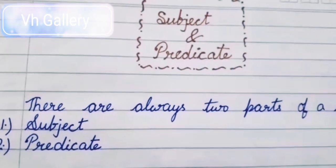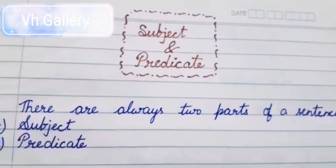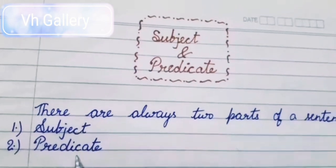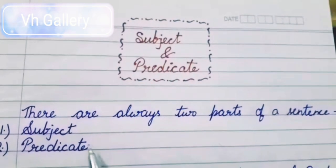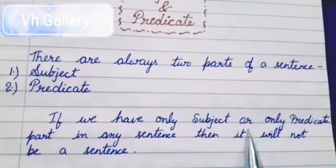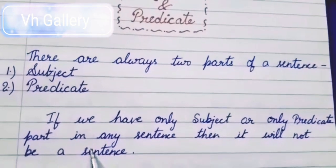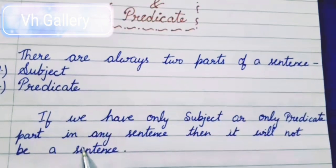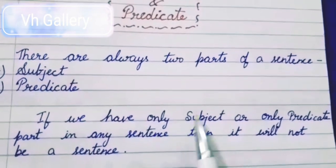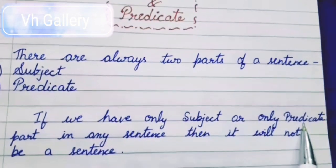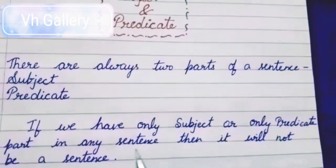First of all, there are always two parts of a sentence in English grammar. Humarae sentence ke hamisha do parts hoti hai, jinko hum bolte hai: the first part is our subject and the second part is predicate. In do parts se milkar hi humara ek sentence banta hai. So if we have only subject or only predicate part in any sentence, then it will not be a complete sentence. Both subject and predicate are necessary to make a complete sentence.